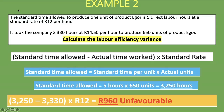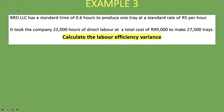Example 3 introduces a variation. DRD LLC has a standard time of 0.6 hours to produce one tray at a standard rate of 5 rand per hour. It took the company 22,000 hours of direct labor at a total cost of 99,000 rand to make 27,500 trays. Pause the video and attempt to calculate the labor efficiency variance on your own before continuing.